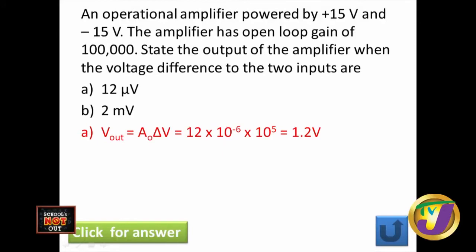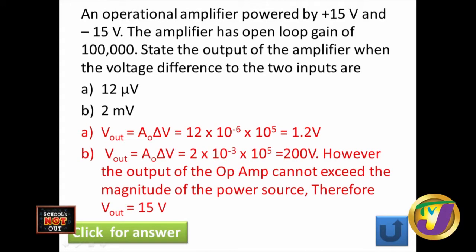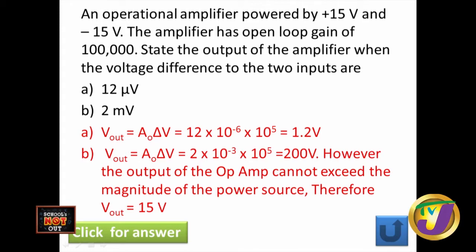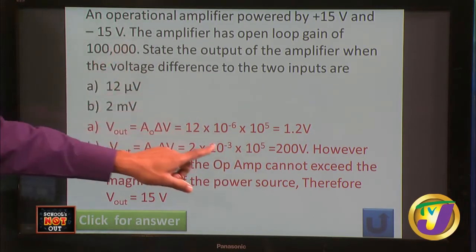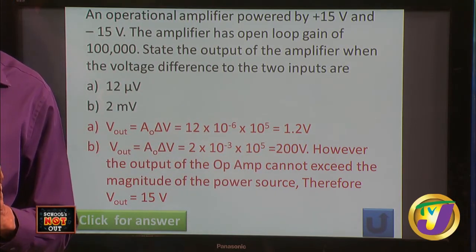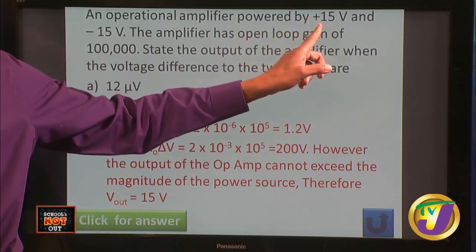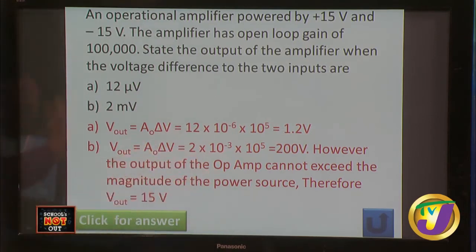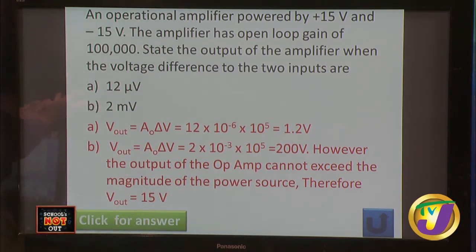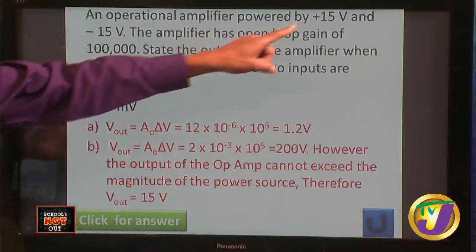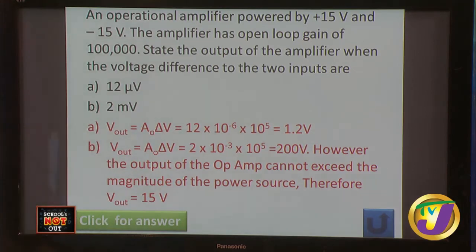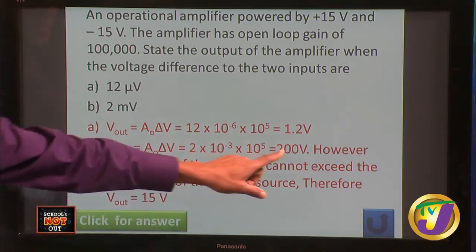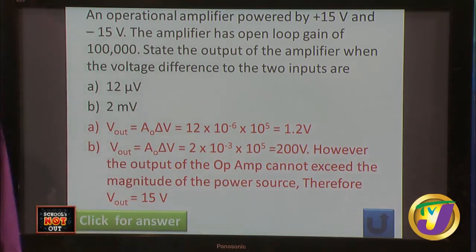For the second part, when the voltage difference is 2 millivolts, V out = 100,000 times 2×10⁻³, which gives 200 volts. But we know it can't exceed 15 volts, because 200 volts is not possible — the limit to which the operational amplifier can give any output is 15 volts, which is the power supply input. So that output would be 15 volts.